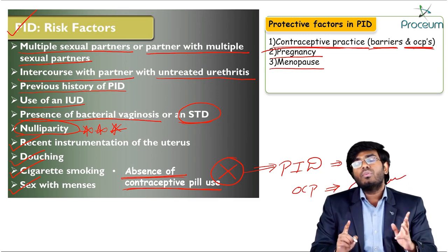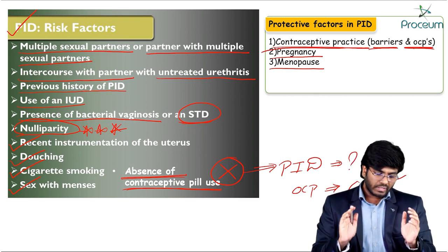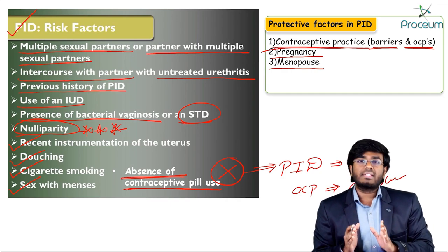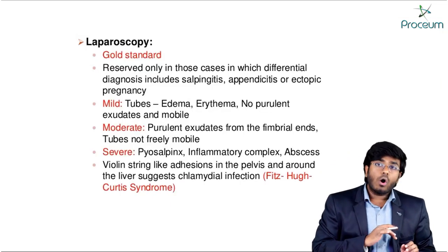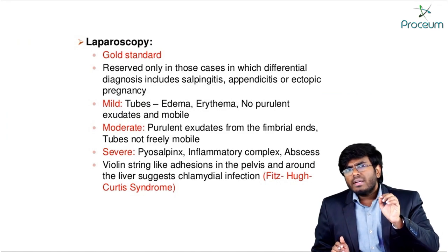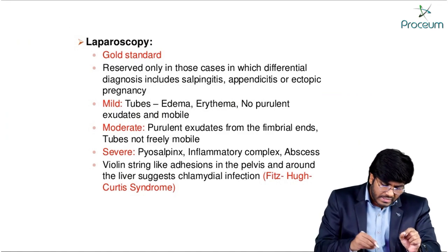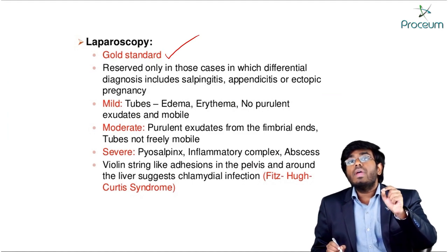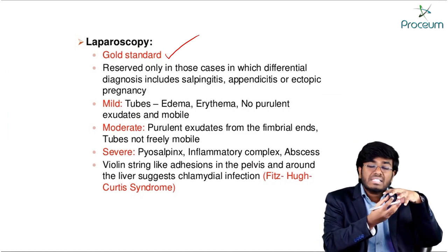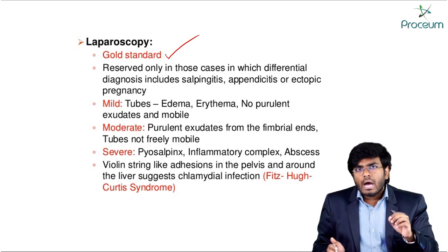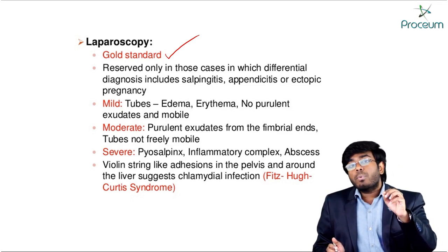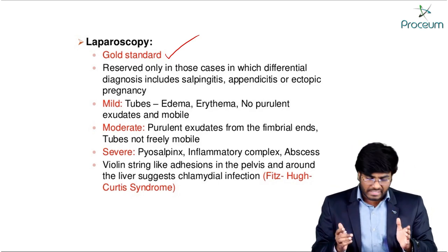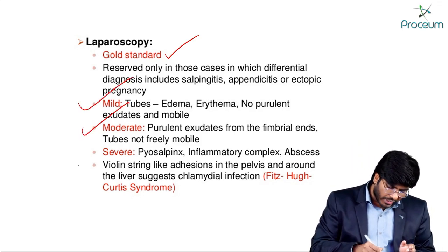Menopause is also a protective factor for PID. To summarize: we've covered the protective factors and risk factors for PID. Laparoscopy is the gold standard for diagnosis, where pus extruding from the fallopian tubes is seen. Based on laparoscopic evidence, PID is classified into three categories: mild, moderate, and severe.